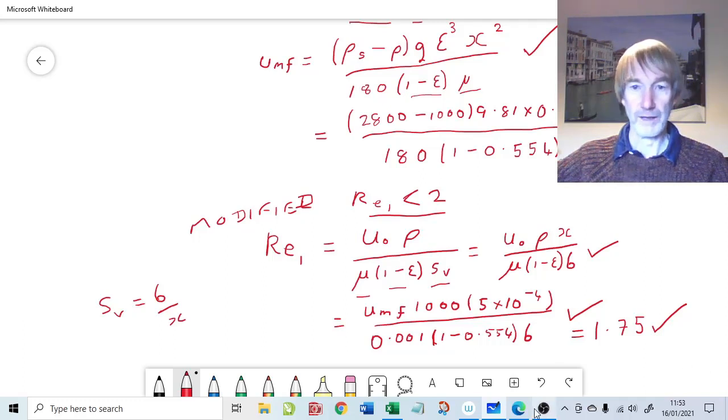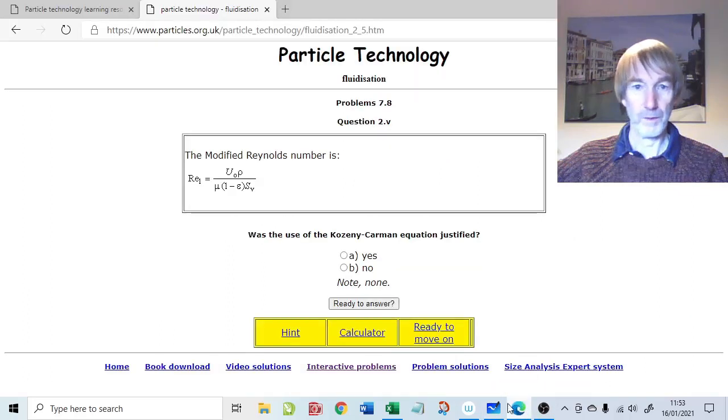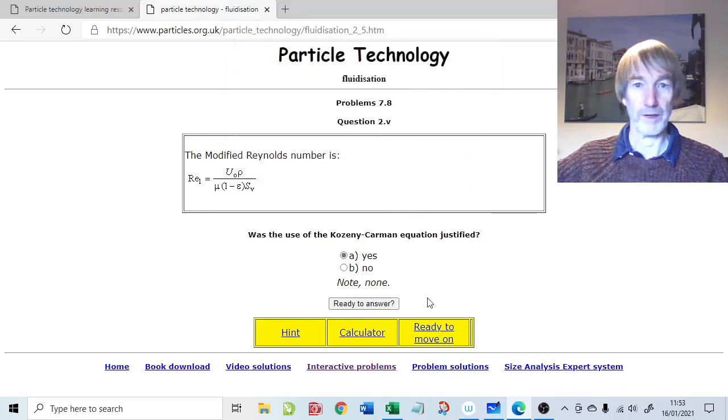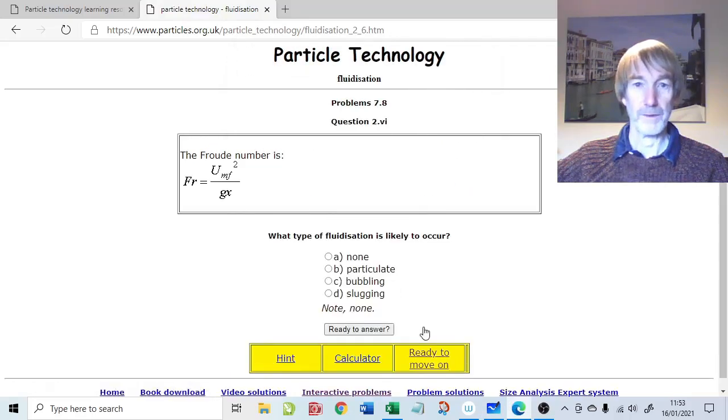So we're okay there. We can use the Cousini-Karman equation to answer this problem. Was it valid? Yes, it was valid. Just check that. Yep, we've got that right. Ready to move on. Excellent.